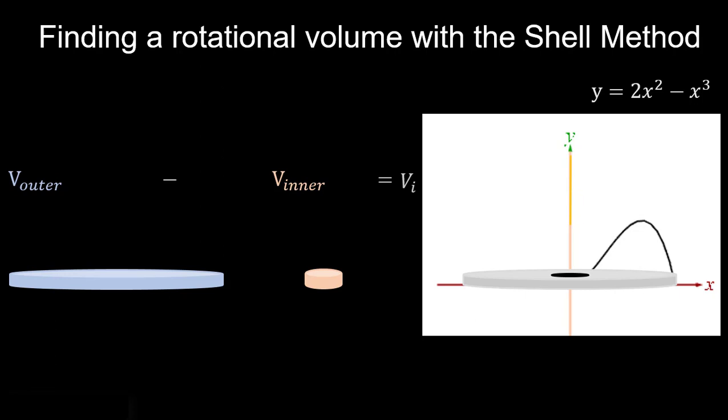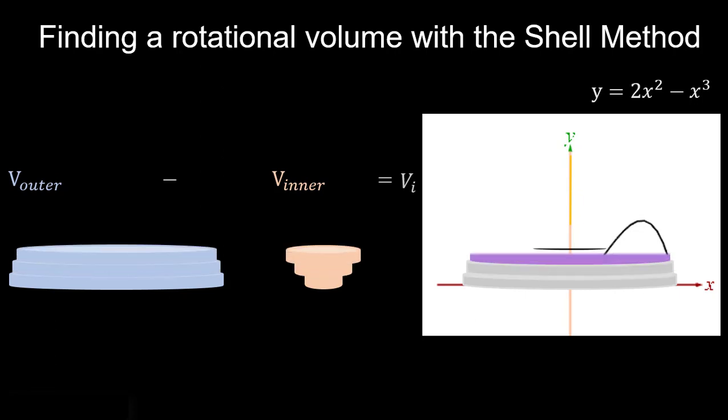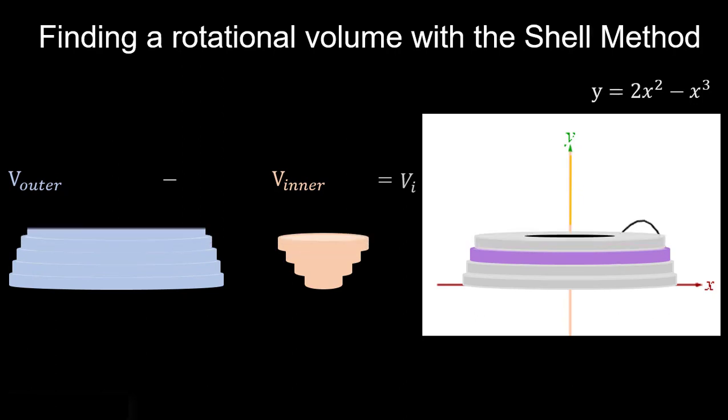And this is just one washer. We'd stack up a bunch of these to get our whole volume here. We'd add the volume in each of these washers and that would give us the volume of our bundt cake.